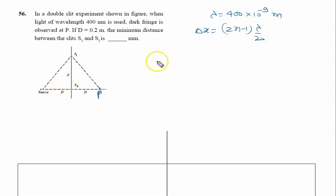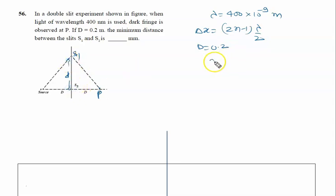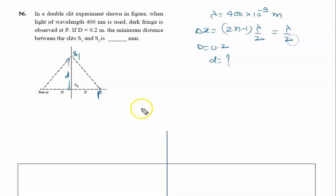Capital D is given as 0.2 meter. We need to find the minimum distance between slits S1 and S2, that is small d. For minimum distance, we take the first minima, putting n = 1, which gives path difference Δx = λ/2.